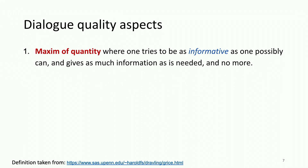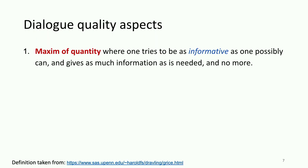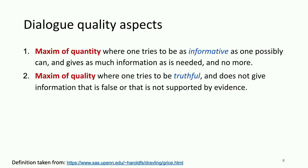The first maxim, the maxim of quantity, means that you should be informative in the conversation and no more — meaning that you don't have to say things you believe to be false, and you don't have to talk about things you lack adequate evidence for. Current neural dialogue systems tend to violate this maxim, as responses tend to be overly generic and short, and therefore less informative than desired. The second maxim, the maxim of quality, means that you have to be truthful in the conversation, and you should not say things that are false or not supported by evidence.